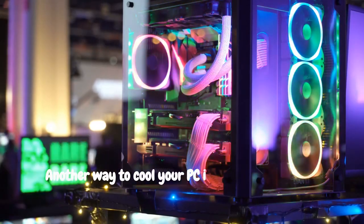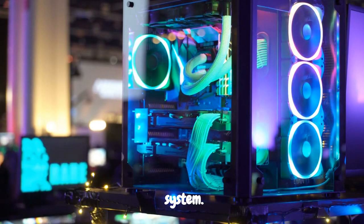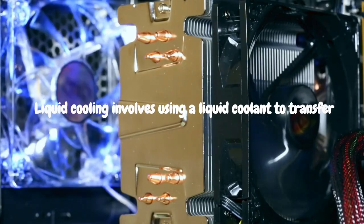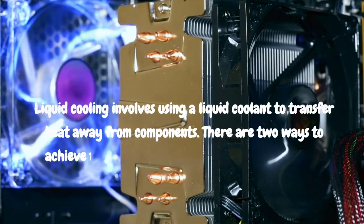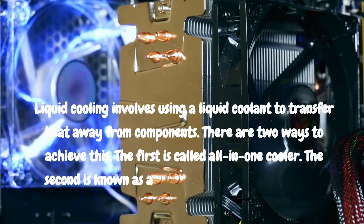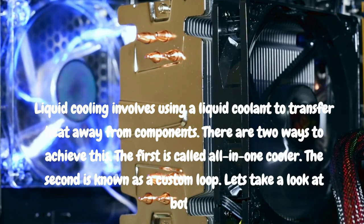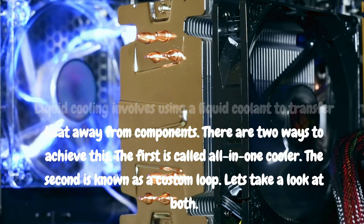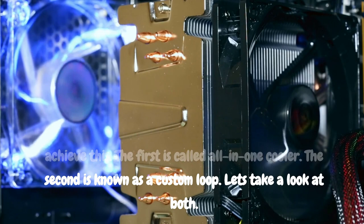Another way to cool your PC is with a liquid cooling system. Liquid cooling involves using a liquid coolant to transfer heat away from components. There are two ways to achieve this. The first is called all-in-one cooler. The second is known as a custom loop. Let's take a look at both.